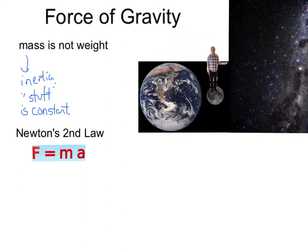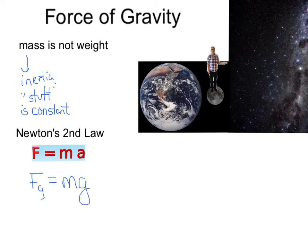But how exactly can I determine what my weight is on each of these planets or moons? For that we have to look towards Newton's second law. Newton's second law says that force equals mass times acceleration — the amount of force an object experiences depends on its mass and its acceleration rate. For the force of gravity, weight is determined by your mass and the acceleration of the earth on you, represented by little g, the acceleration due to gravity. On earth, that number is 9.8 meters per second squared.